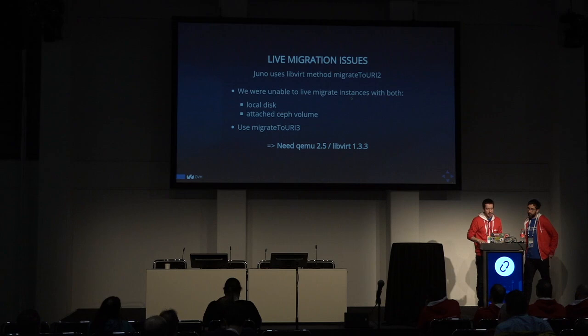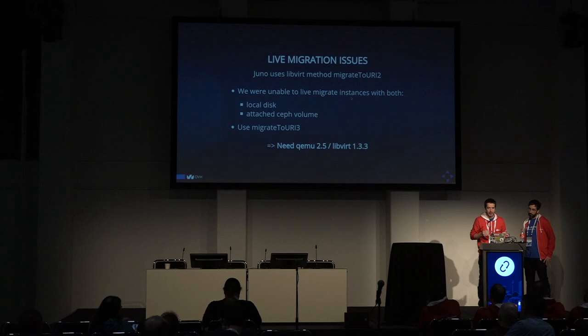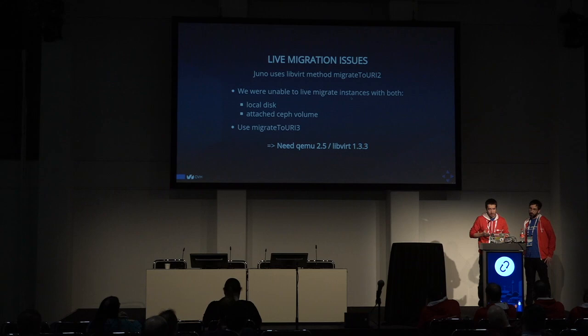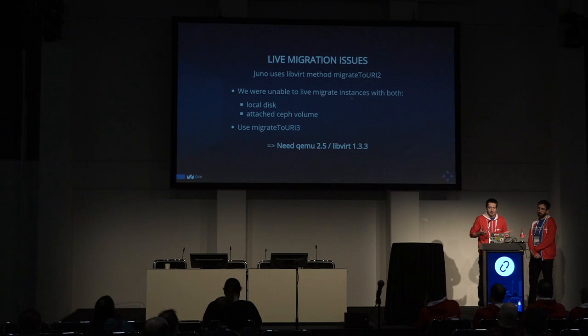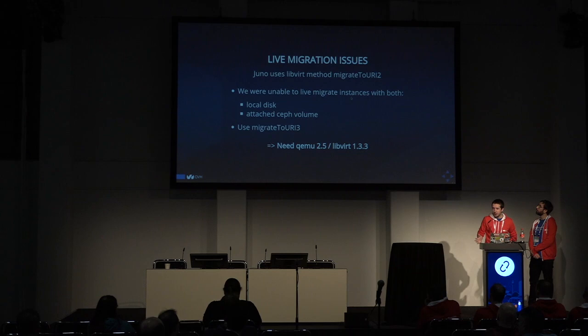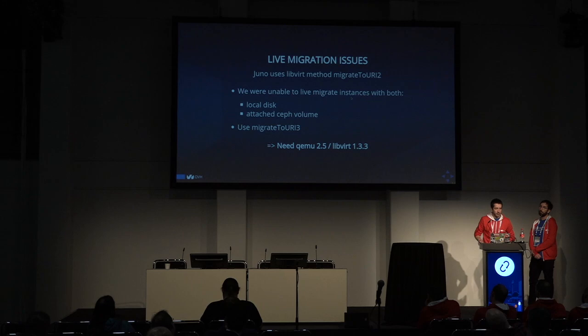We had another issue related to the method used by Nova to manage migration. On the Juno OpenStack release, Nova was using migrate_to_uri version 2. This function was not able to live migrate an instance which had local disk and an attached Ceph volume. Because of that we needed to shut down the instance, detach the volume, migrate the instance (not live migrate, since it was shut off), and start it again. The solution was to use the next version of this function, migrate_to_uri version 3, and to do that we also needed to upgrade QEMU and libvirt again.